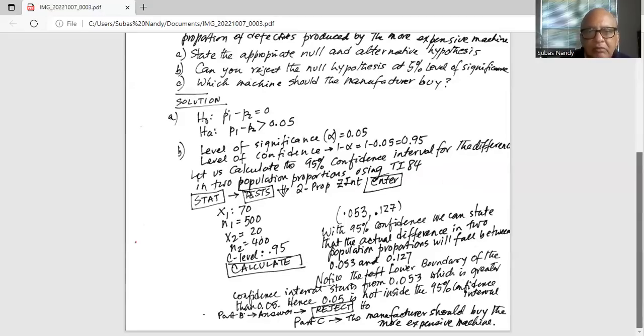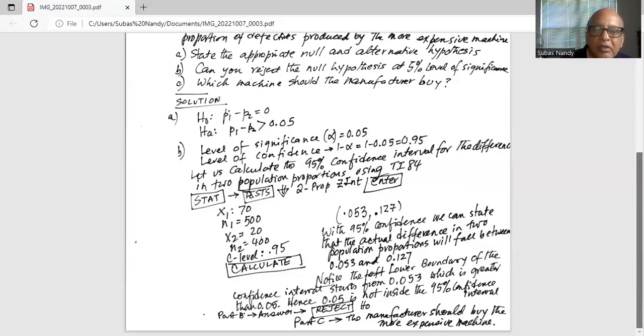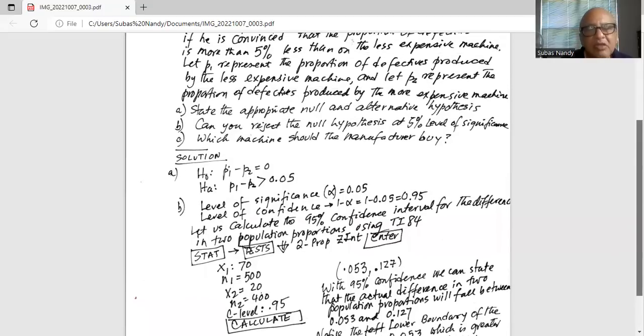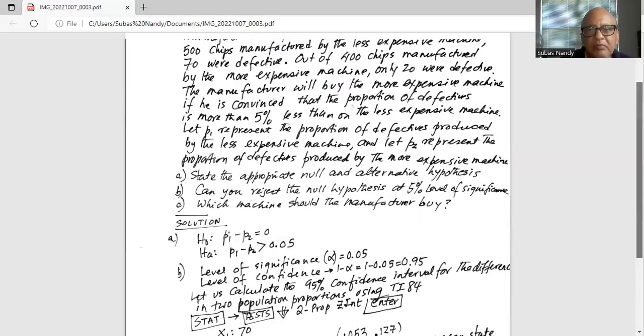Part C, which machine should the manufacturer buy? The manufacturer should go ahead and buy the more expensive machine because we have rejected the null hypothesis and we have collected enough evidence to support the alternate, which is P1 minus P2 greater than 0.05. So P1, which is the proportion of defects produced by the less expensive machine, will be always greater than P2, which is the proportion of defectives produced by the more expensive machine.